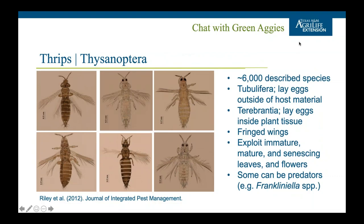Within the order Thysanoptera, there are over 6,000 described species of thrips. There are two main categories: Tubulifera, which lays eggs outside of the host material, and Terebrantia, which lays eggs inside the plant tissue. A lot of the ones we deal with — for example, the Western flower thrips — are in Terebrantia. They typically lay their eggs in or on tissues, making them hard to contact with a contact insecticide. They have fringed wings and exploit immature, mature, and senescing leaves and flowers. Some can also be predators.